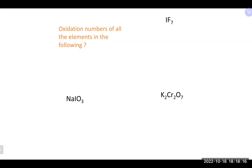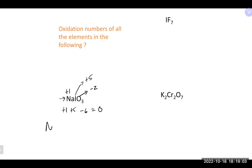For sodium iodate (NaIO₃): start with oxygen at −2 times three = −6. Sodium is group 1, so +1. The compound is neutral, so oxidation numbers must add to zero. With −6 + 1 = −5, the iodine must be +5. Therefore: sodium is +1, iodine is +5, and oxygen is −2.